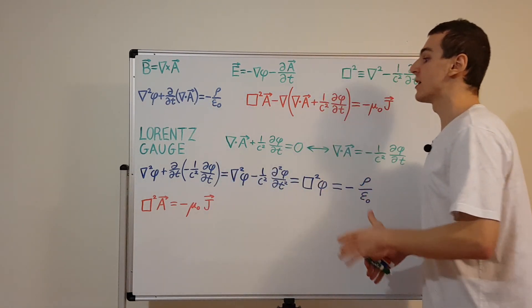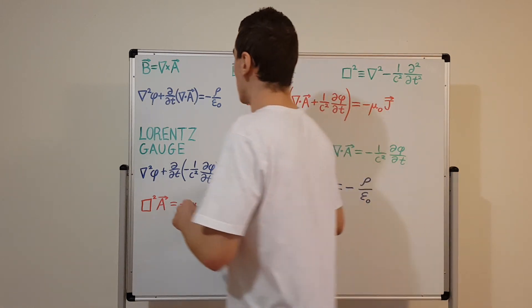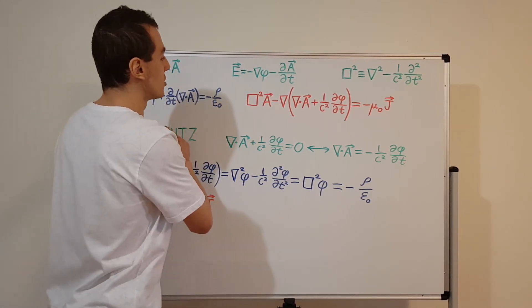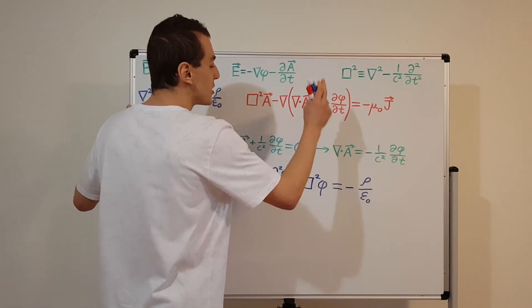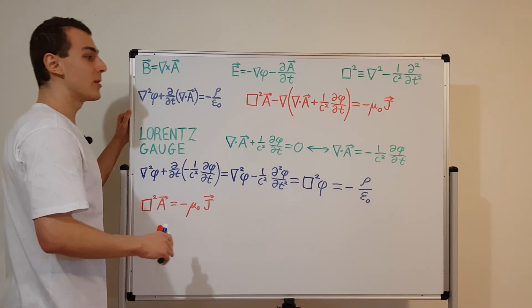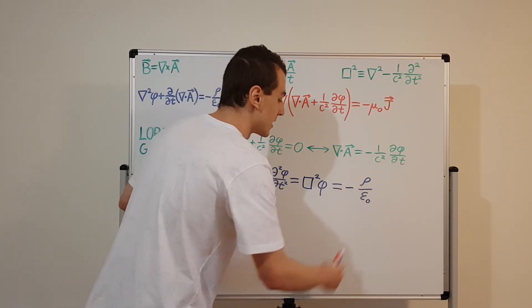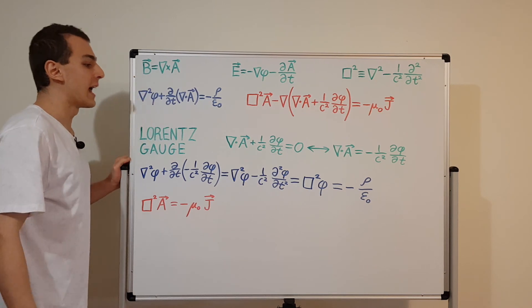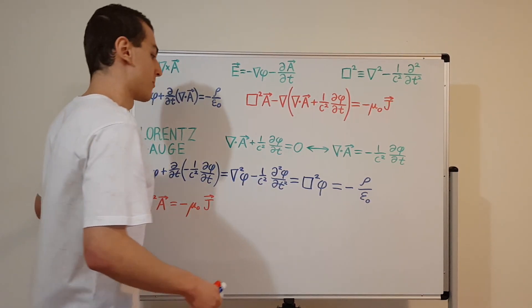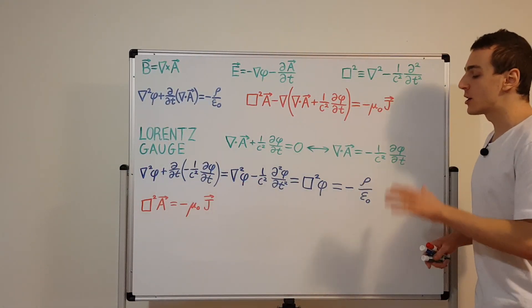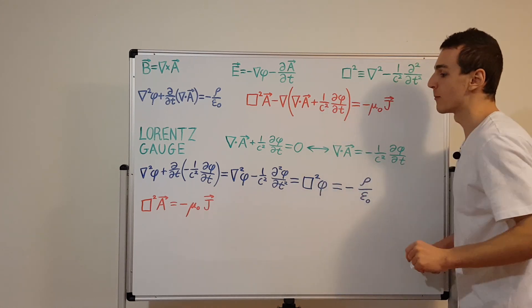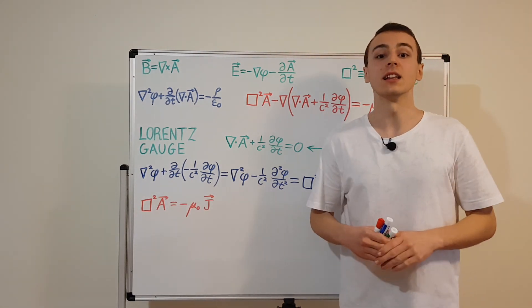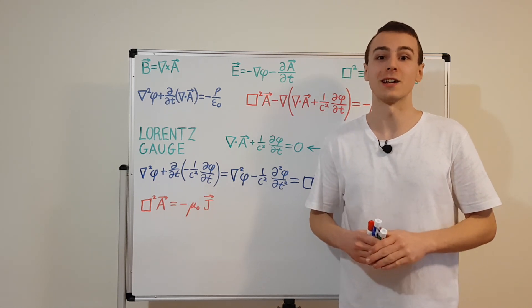The Lorentz gauge is a very important and practical gauge that is consistent with relativistic theory. We've gone from big messy second order partial differential equations, which would be very difficult to solve, and condensed them into compact inhomogeneous wave equations. That is the beauty of the Lorentz gauge. In the next video, we're going to look at an alternative gauge choice — the Coulomb gauge — which is a little simpler, but both have the identical form of the inhomogeneous wave equation.